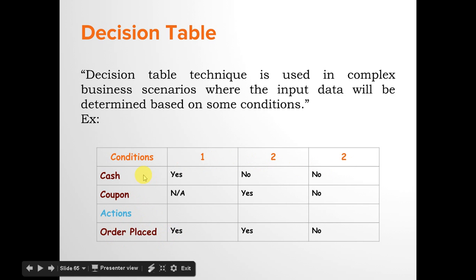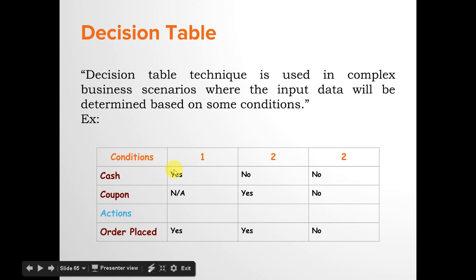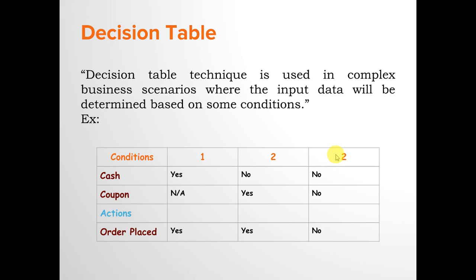The conditions involve cash and coupon, and based on their availability you can place an order successfully. In condition 1, if you have cash, there is no need to check whether you have a coupon — you can place the order successfully. In condition 2, if you have no cash, it checks whether you have a coupon; if you do, you can still place the order. In condition 3, if you have no cash and no coupon, you will not be able to place the order. This is how you understand the decision table technique.